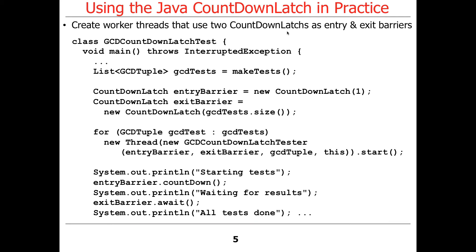What we really want to focus on is the part that uses the various kinds of barrier synchronizers. Here is the test program that exercises those four different implementations and illustrates how to use entry and exit barriers implemented with CountDownLatches. We create both barrier synchronizers as CountDownLatches — an entry barrier with a count of one, used to ensure the main thread gets everything up and running before the GCD computations start, and an exit barrier used by the main thread to wait until all other threads finish.